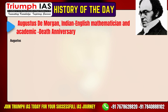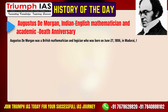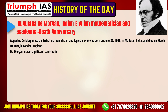Augustus De Morgan was a British mathematician and logician who was born on 27th June 1806 in Madurai, India, and died on 18th March 1871 in London, England.